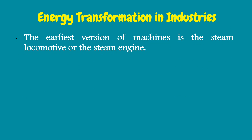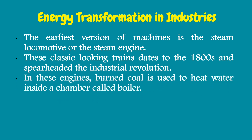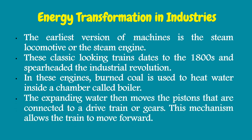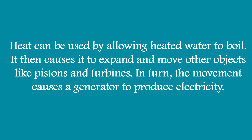The earliest version of machines is the steam locomotive, or steam engine, which dates to the 1800s and spearheaded the Industrial Revolution. In these engines, burnt coal heats water inside a chamber called a boiler. The expanding water then moves pistons connected to a drive train or gears, allowing the train to move forward. A steam-powered train converts heat energy to mechanical energy. Heated water boils, expands, and moves objects like pistons and turbines, which in turn cause a generator to produce electricity.